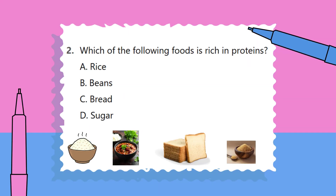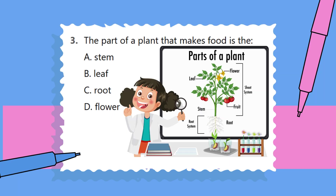Question 2. Which of the following foods is rich in proteins? Question 3. The part of a plant that makes food is the: A. Stem. B. Leaf. C. Root. D. Flower.